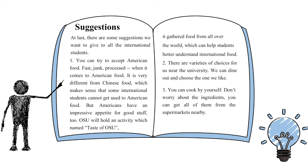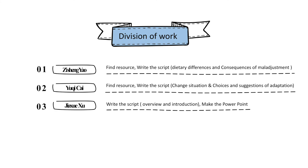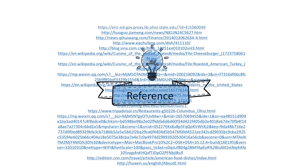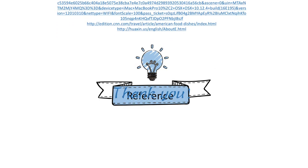Next, here are some suggestions for adaptation. First, you can try to accept American food. Fast, junk, and processed are words often associated with American food, but Americans have an impressive appetite. OSU will hold an activity called Taste of OSU, which gathers food from all over the world and helps students better understand international food. Second, there are varieties of dining choices near the university. Third, you can cook by yourself — don't worry about ingredients, you can get all of them from nearby supermarkets. We hope that all of you can adapt to the new dietary environment sooner and better. Thanks for watching.